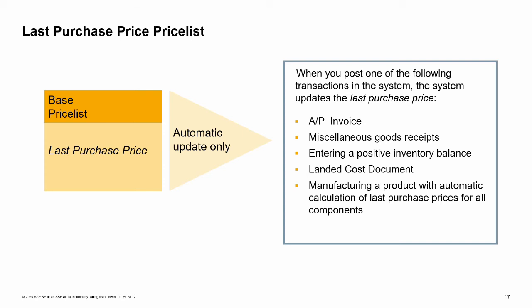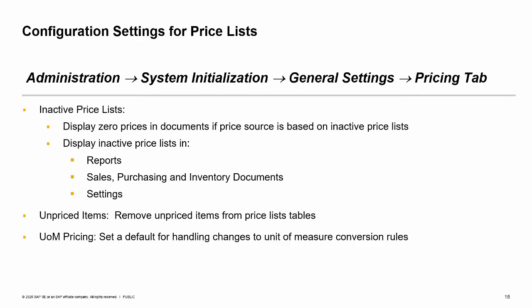These two price lists are grayed out in the Price Lists window because you cannot change them. Last Purchase Price is updated by Accounts Payable Invoices, Goods Receipts, Goods Receipt P.O.s, Inventory Postings for Initial Quantities or Adjustments for Positive Stock Differences, Landed Costs Documents, and Automatic Calculation of Last Purchase Price for Bills of Materials used in production. Canceling any of these documents will not affect this price. If none of these actions have been performed for an item, the Last Purchase Price list will not contain a price for that item. You can base other price lists on the Last Purchase Price, but you cannot change its prices manually.